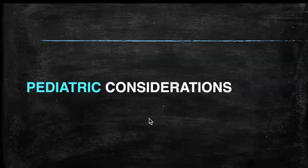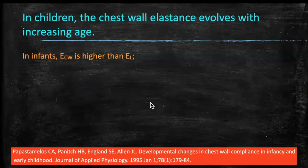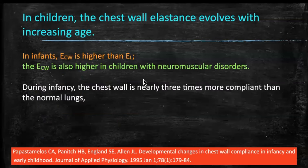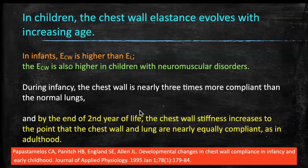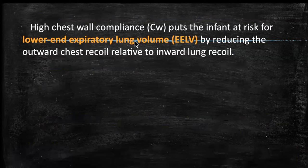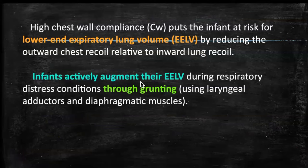Now for pediatric considerations. Children are different from adults. In infants, chest wall elastance is higher than lung elastance, and also higher in children with neuromuscular disorders. During infancy, the chest wall is nearly three times more compliant than normal lungs. By the end of the second year of life, chest wall compliance decreases to the point that chest wall and lungs are nearly equally compliant as in adult life. High chest wall compliance in infants under two years puts them at risk of lower end-expiratory lung volume.